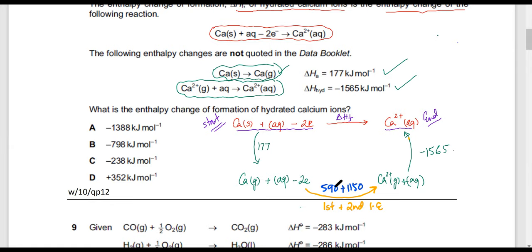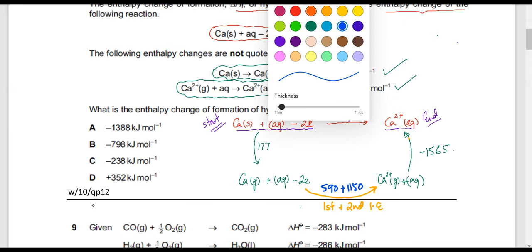So we're going to write that down: it's going to be 590 plus 1150. That's how you remove two electrons. Is this step clear to everyone? Now I've completed this other path.